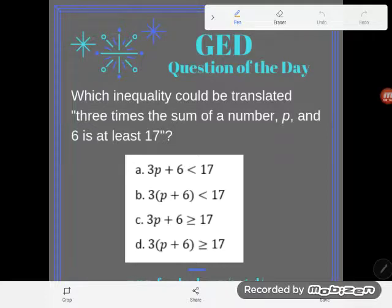It's not a hard language but it is foreign to a lot of you guys and so you look at math and it looks like gibberish to you. So let's take a look. It says, which inequality could be translated three times the sum of a number P and 6 is at least 17?